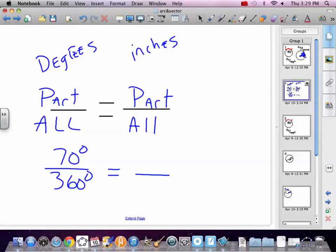Here's where the two are different. For arc length, the whole circle is the circumference, 2 pi r. But for sector, the whole circle is area, which is pi r squared. That's the only difference you've got to remember. Everything else is the same.